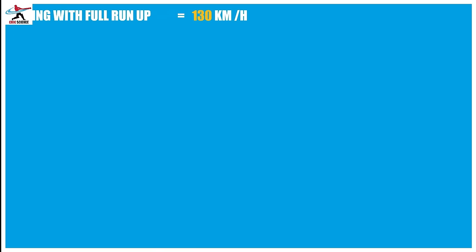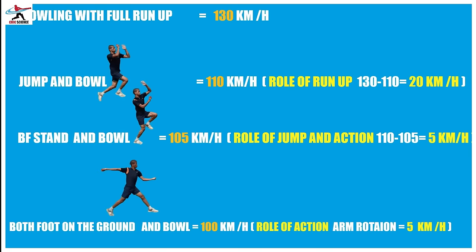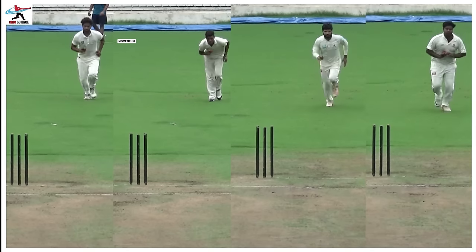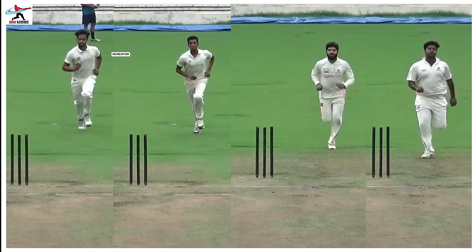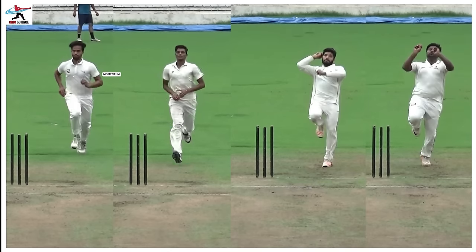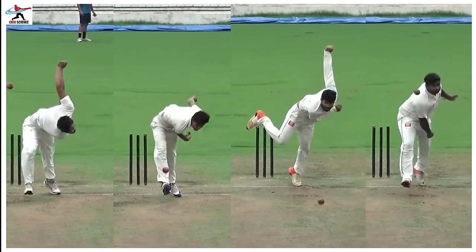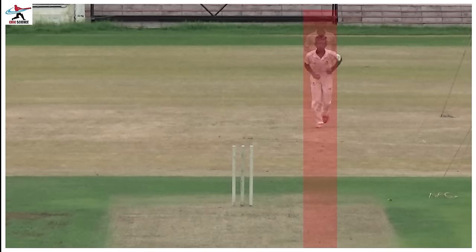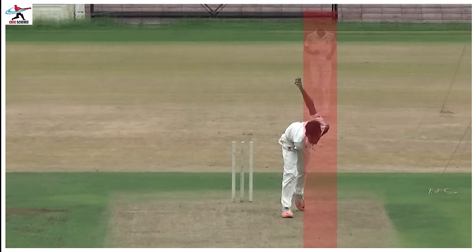आप देखेंगे कि हर test में speed अलग-अलग आ रही है. इस speed के अंतर से आपको हर part का contribution पता चल जाएगा. आपके mind में अब यह आ रहा होगा कि अगर 130 km की रफ्तार केवल इसलिए घट रही है कि आप दौड़ कर पूरे run-up से ball नहीं कर पा रहे हैं, तो आइए जानें क्या कारण है कि run-up आपके पूरे balling को affect करता है.